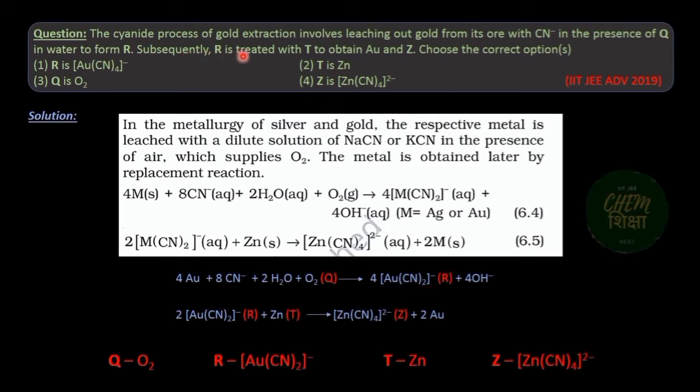Further, the question states that molecule R, that is the di-cyano complex of gold, reacts with T to form gold and a reagent Z.